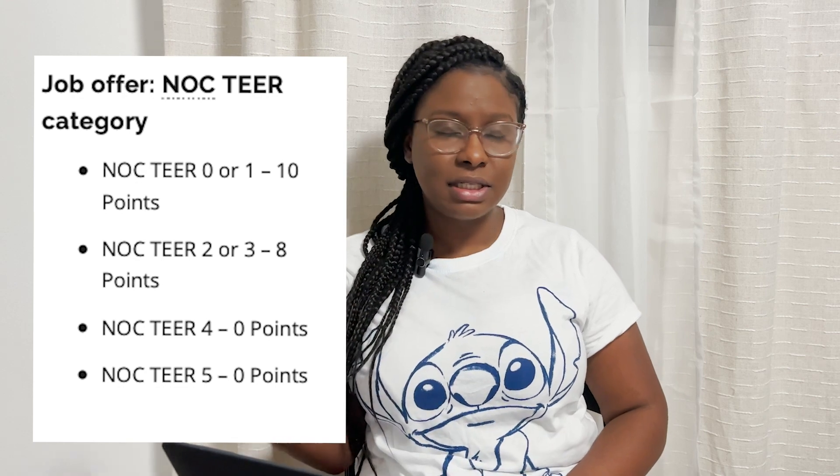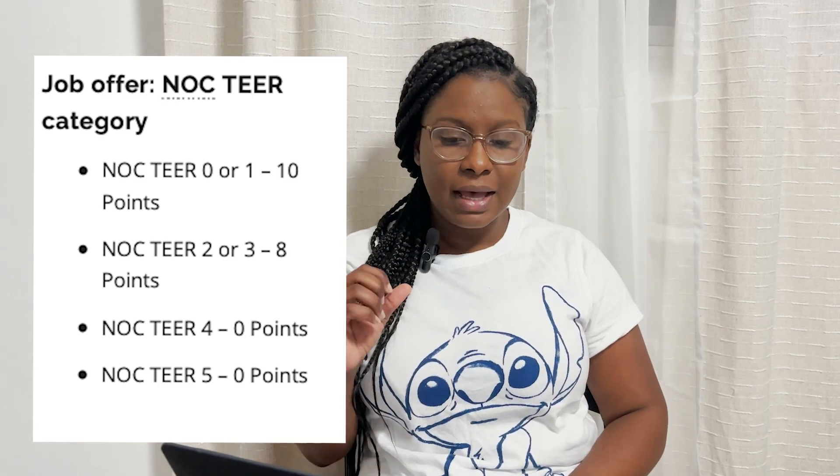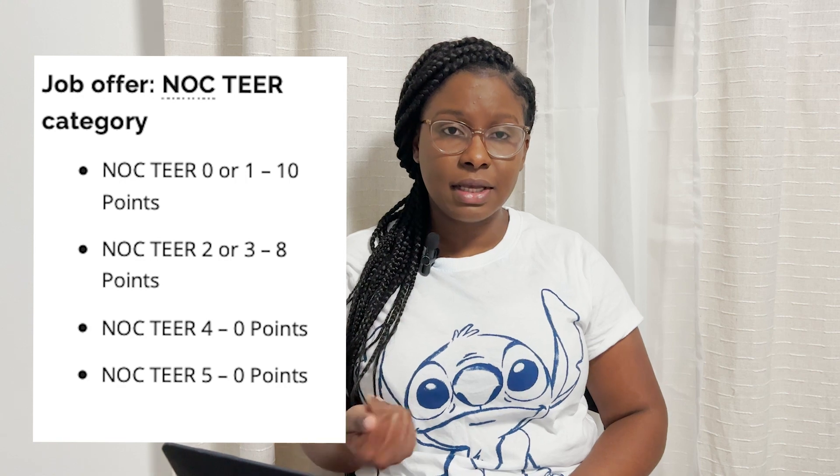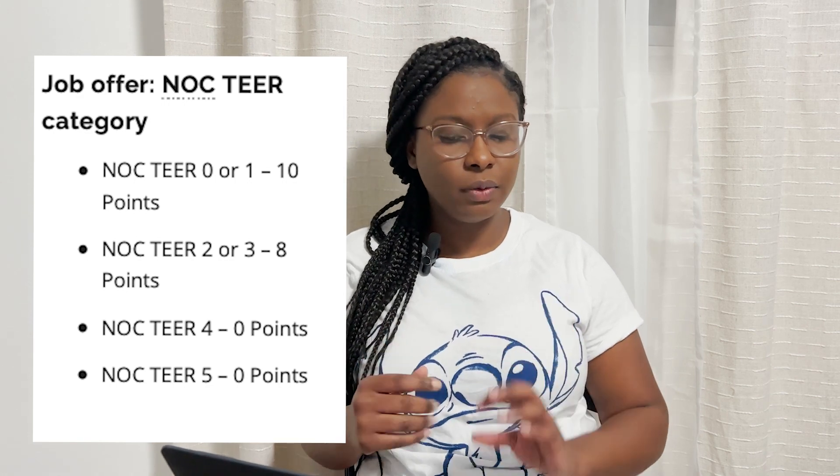Now let's look at the points — what do you get points for — and see how you can adjust based on your current situation. For example, if you're living somewhere that you don't get a lot of points, you can move somewhere that you'll get more. The first thing is the labor market factors. The first thing I spoke about was the NOC tier system — you have to make sure it's a 0, 1, 2, or 3 to get points. If it's 0 or 1 you get 10 points; if it's 2 or 3 you get 8 points; and if it's 4 or 5 you don't get any points.